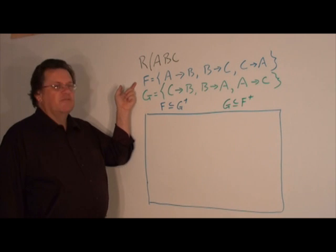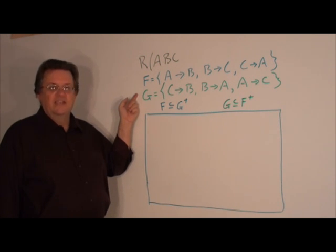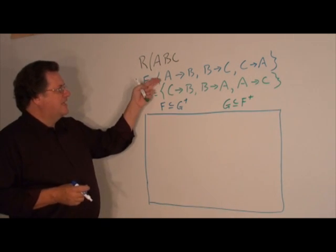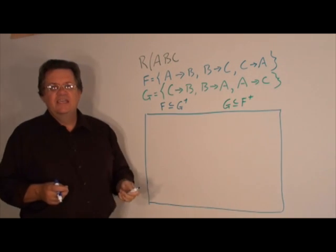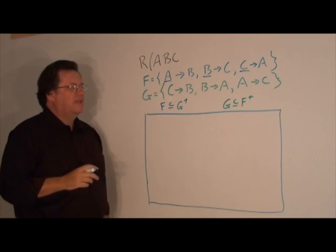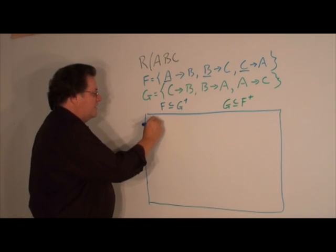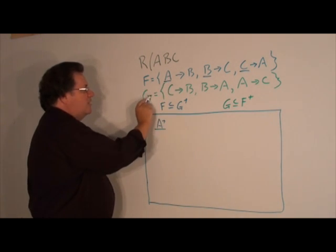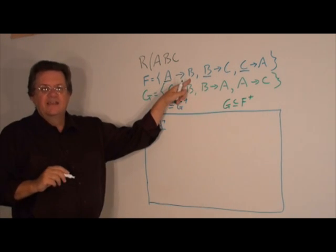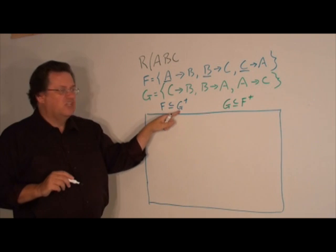I've rewritten the functional dependencies for F in blue and for G in green for easier reading. What we want to do is take every functional dependency in F, take the left-hand side, and apply the X closure for each left-hand side against G. We start off with A and compute A closure with respect to G. If A closure contains the right-hand side of the functional dependency, then we know that dependency would be in G closure.